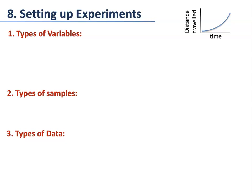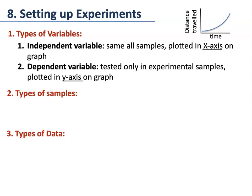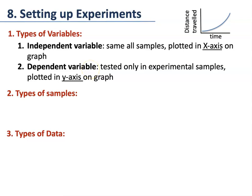Our last topic: how do we set up experiments? Experiments have types of variables — things that can change — types of samples, and types of data you can collect. There are two types of variables. The independent variable is kept the same across all samples and is plotted on the x-axis. For example, if you are measuring the distance traveled by an object, time is the thing you can't change, so it is the independent variable on the x-axis. The dependent variable is what you are testing in your experimental samples and is always plotted on the y-axis. Scientists often draw graphs of their data to make it easier to understand.